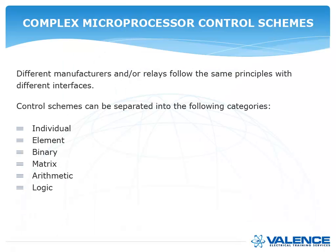When you're talking about digital control schemes, it doesn't matter what manufacturer you're talking about, they all basically break down into the following categories. You can have an individual element scheme, which means you program each element individually. You can have a binary scheme, which is just ones and zeros. You can have a matrix scheme, which is ones and zeros on a chart. Or you can have arithmetic, which is how Schweitzer does it, so everything is broken down into arithmetic symbols. And then you can have a logic system, which is kind of like what I showed you previously.